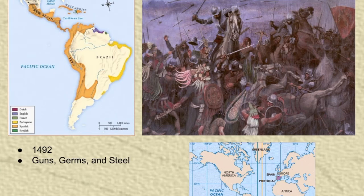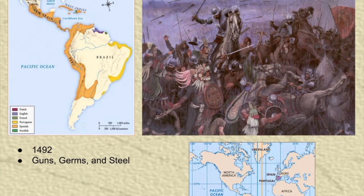We tend to focus on guns as the main difference, but the far more important advantages were steel — swords and armor. An armored person on a horse was kind of like a tank in this time period. Guns were slow; you had to reload every time you shot, and if you were skilled you might fire three times in a minute. And then there's the biology of it. We're experiencing a pandemic right now that is extremely contagious, and even still we're seeing nothing like what happened to the Indians — but it gives you an idea.